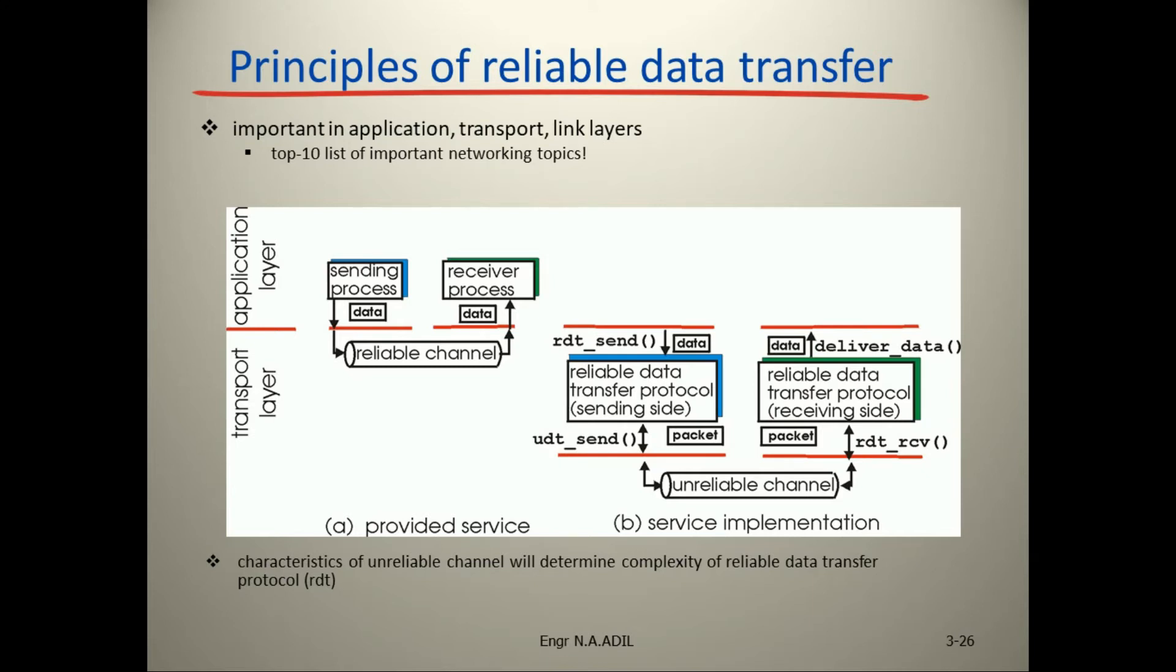Here is the reliable data transfer protocol sending side, which usually uses send as a call. The receiving site data is sent over an unreliable channel, and RDT receive is the reliable data transfer protocol on the receiving side. Characteristics of the unreliable channel will determine the complexity of the reliable data transfer protocol. We will see this in detail in next lectures.